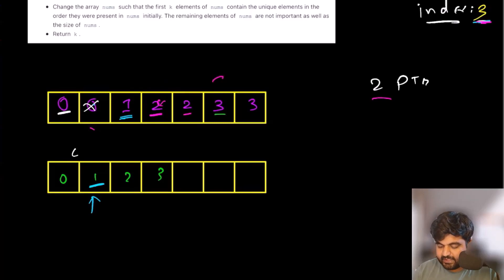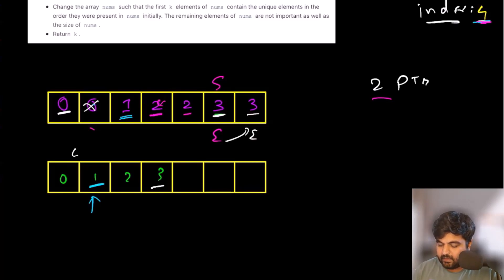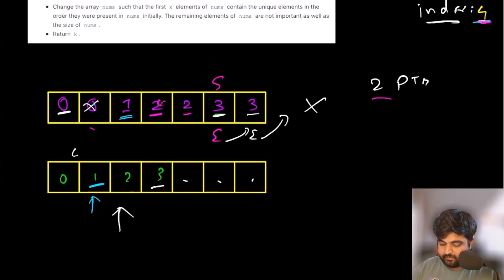The next value is distinct again — starting and ending pointers land at the same position, index becomes four, and we add value three to our answer. Then the ending pointer tries to go to the next position but the array has ended, so we can't do anything. We return this as the answer; we don't care about the remaining values. You can see that starting and ending pointers are working in tandem throughout this process.